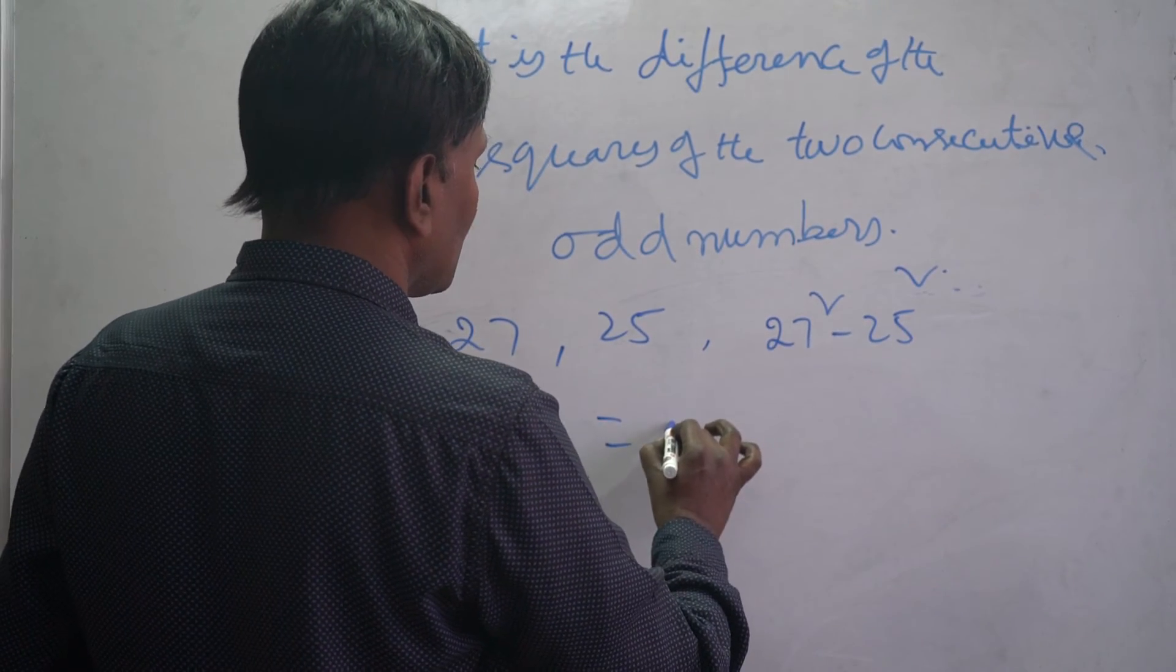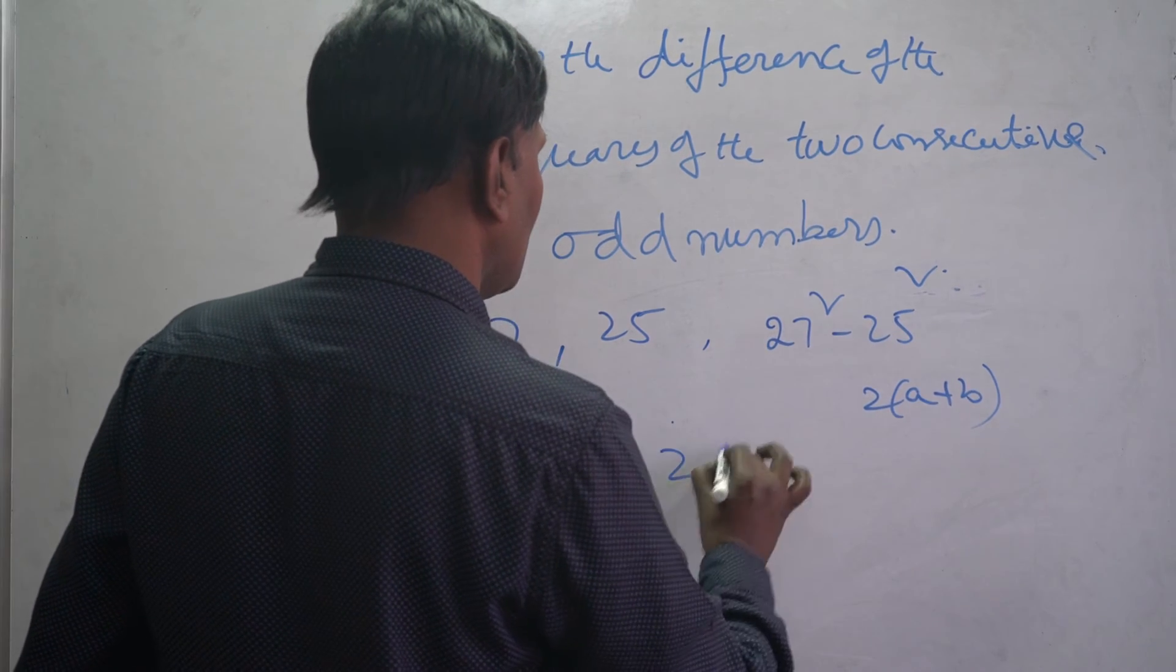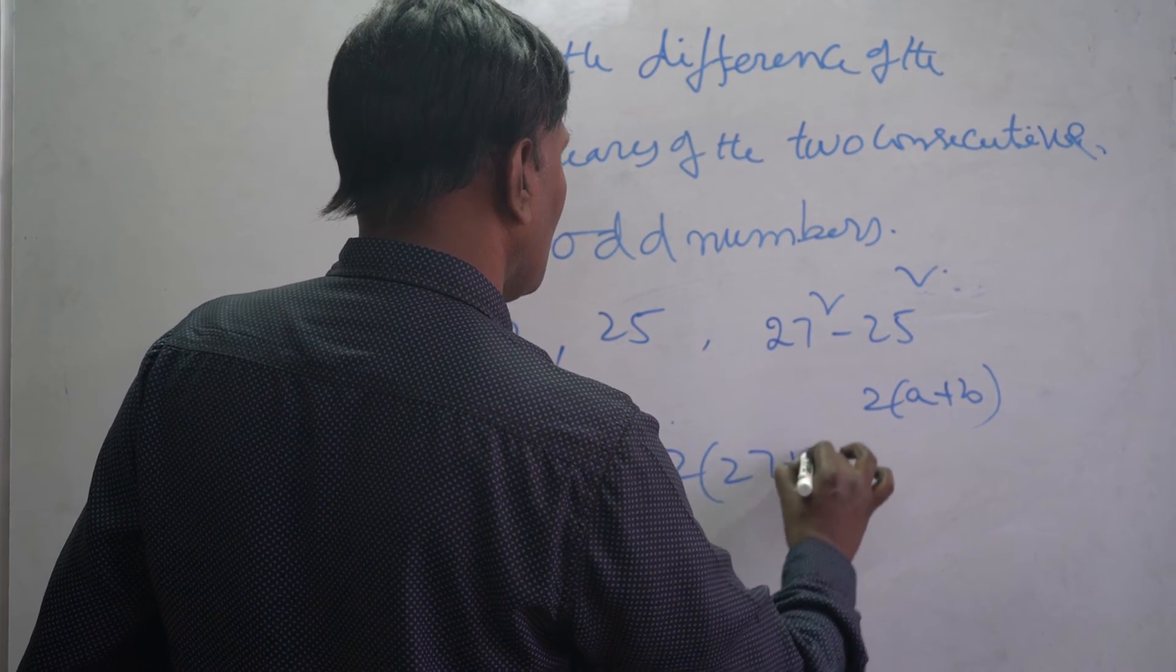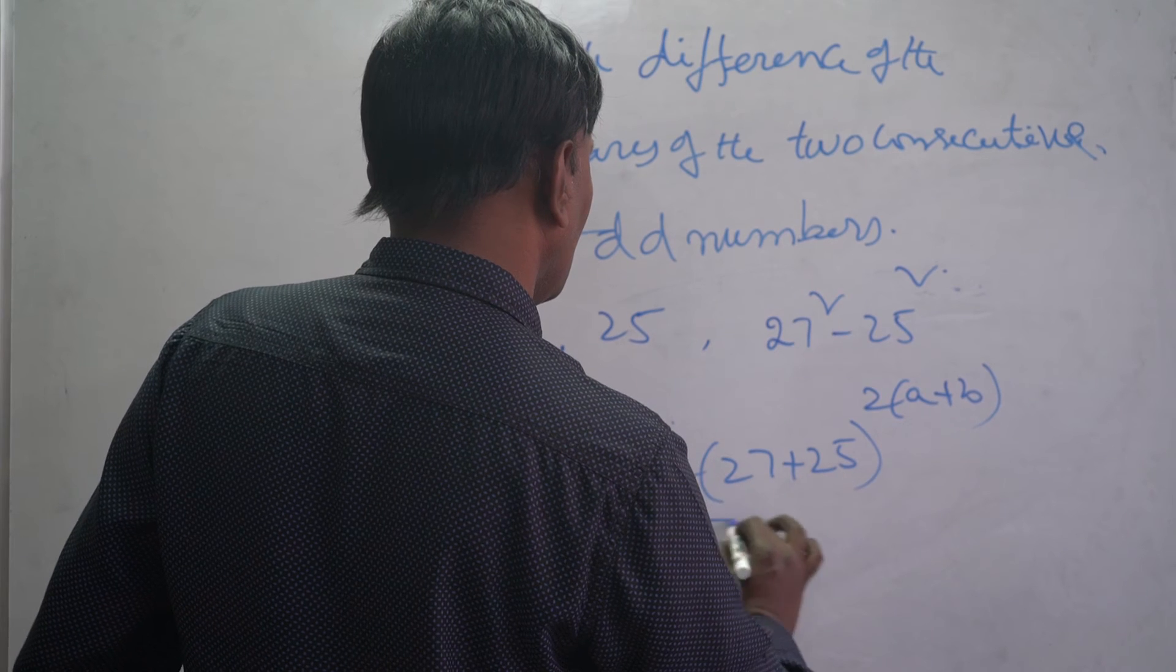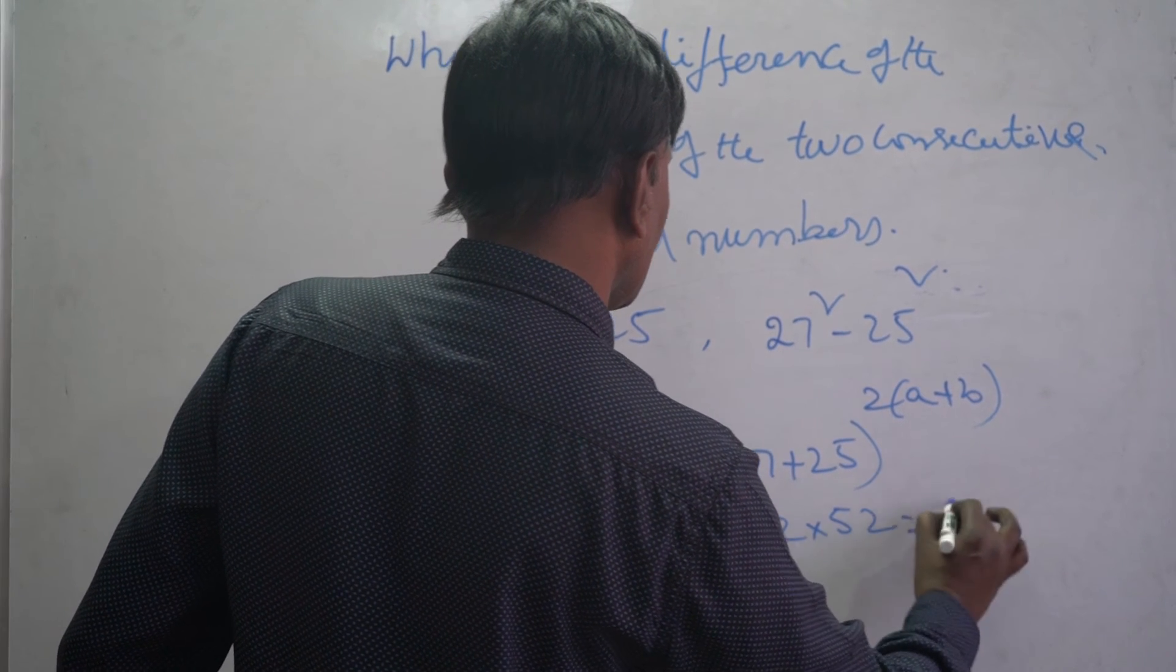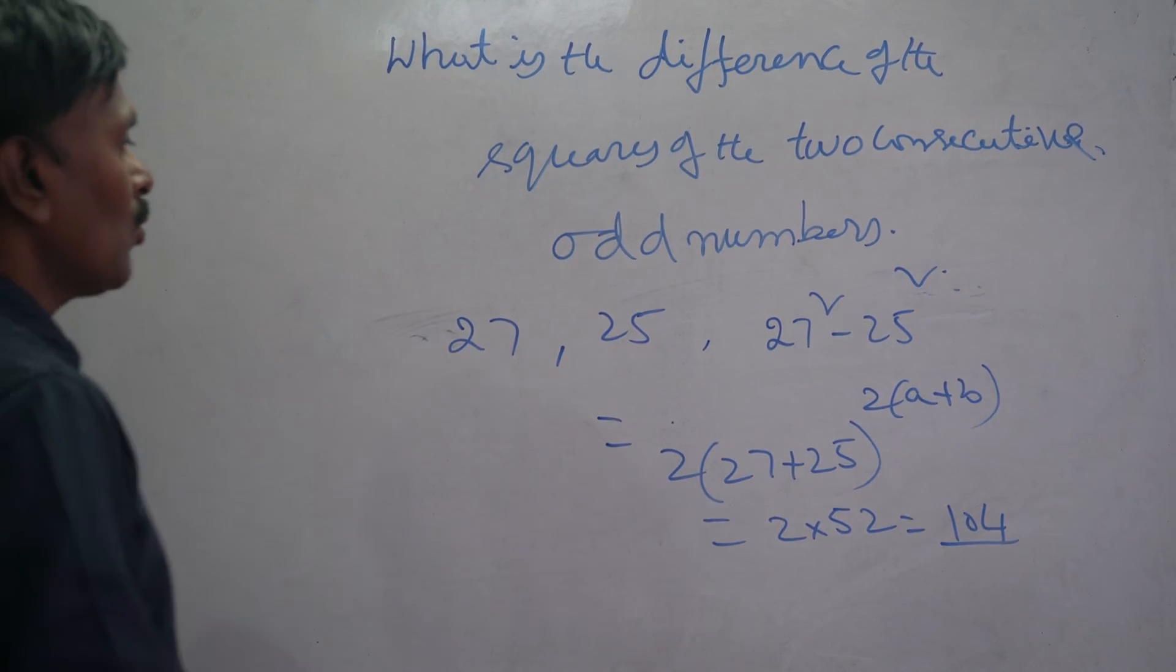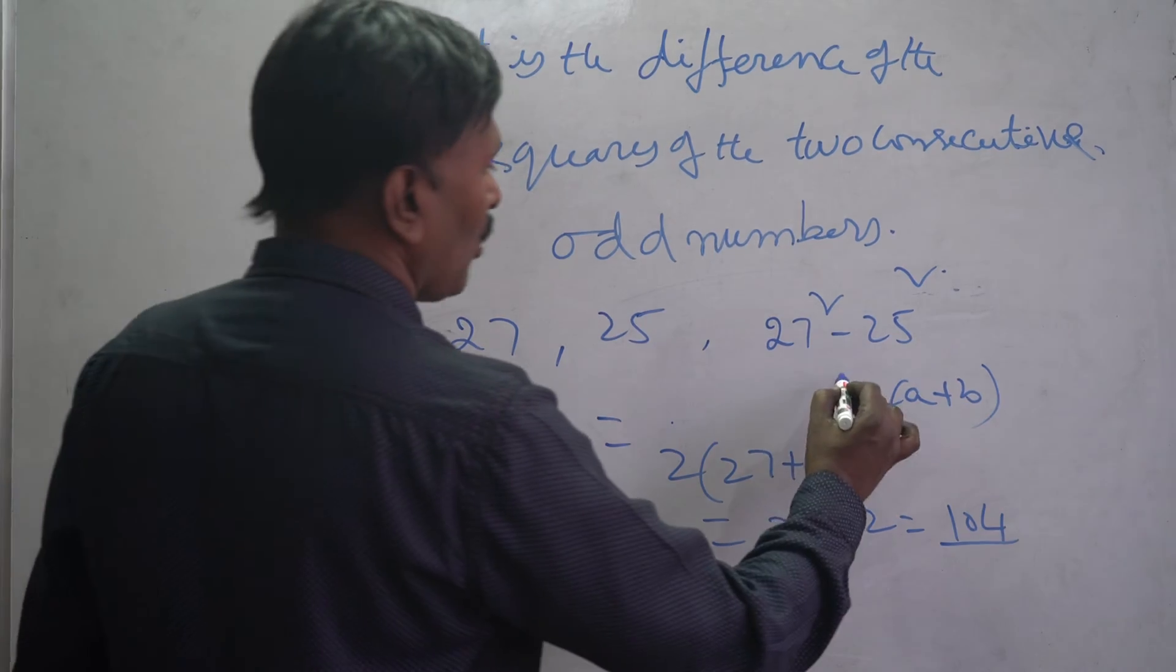What is the output? 2 into a plus b. So 2 into 27 plus 25, this is equal to 2 into 52, this is 104.